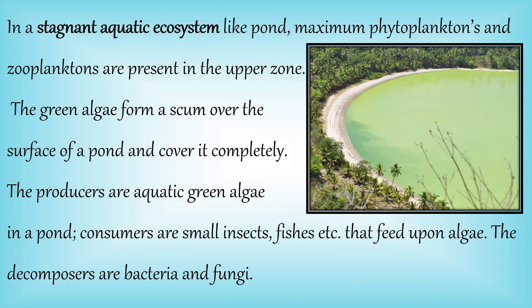In a stagnant aquatic ecosystem like a pond, maximum phytoplanktons and zooplanktons are present in the upper zone because they receive maximum sunlight. Green algae form complete mats covering the surface of the pond. Producers are aquatic green algae; consumers are small insects or fishes that feed on the algae; and decomposers include bacteria and fungi.